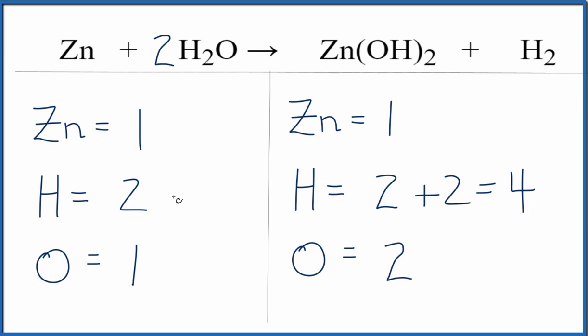Now I have two times two. That gives me four, so the hydrogens are balanced. And the two applies to everything here. So we have one oxygen times two. That gives us two. And when we do that, the equation is balanced.